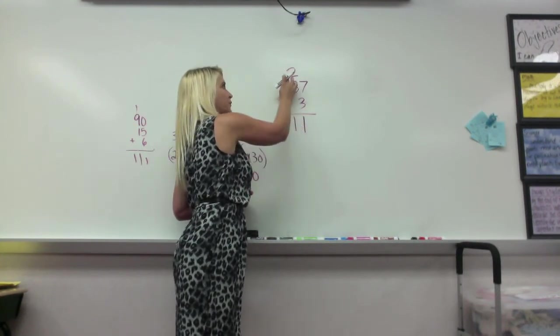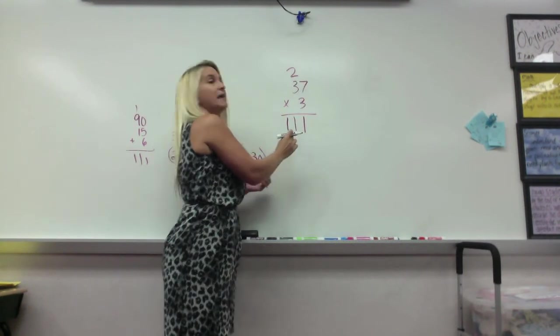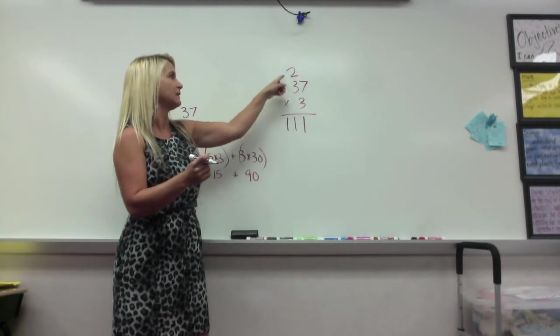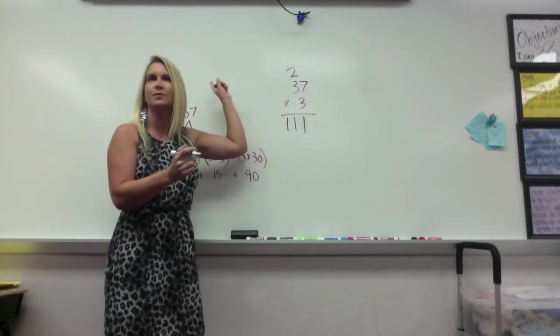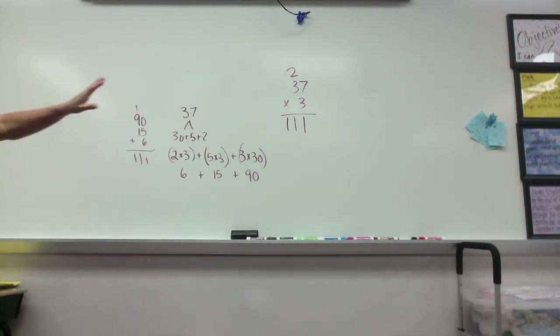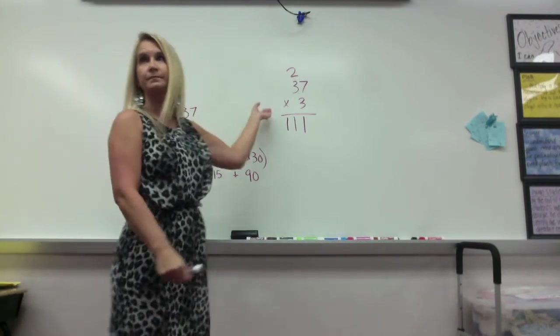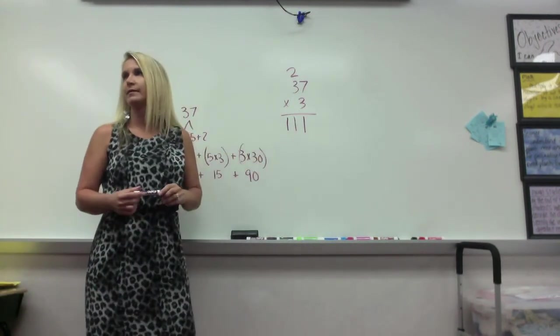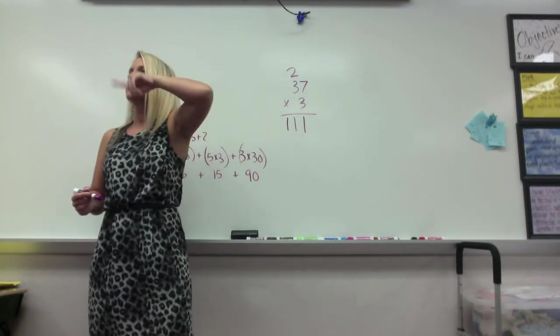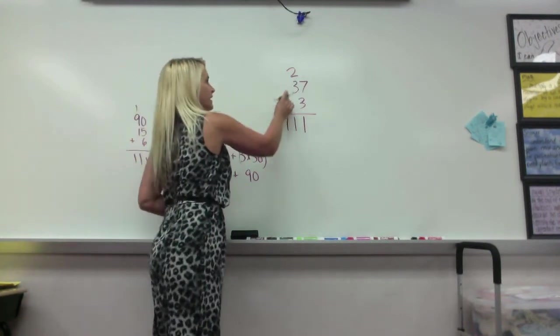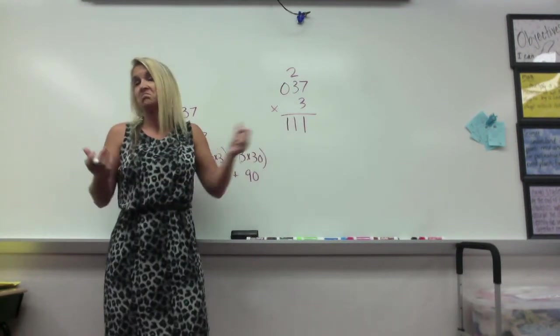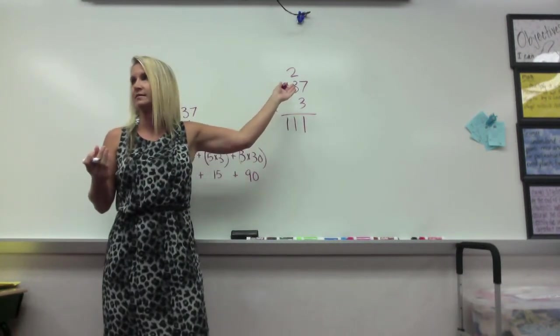Actually, how come you made me regroup this one, but not that one? Think about why do I regroup this time, but when it came to 11 here, I didn't regroup the 1. I want you to talk to your group about why I didn't regroup. Why do we just put it there? Does anybody have any ideas why we don't regroup it? There's no hundreds. There's no hundreds up here on the multiplication problem.